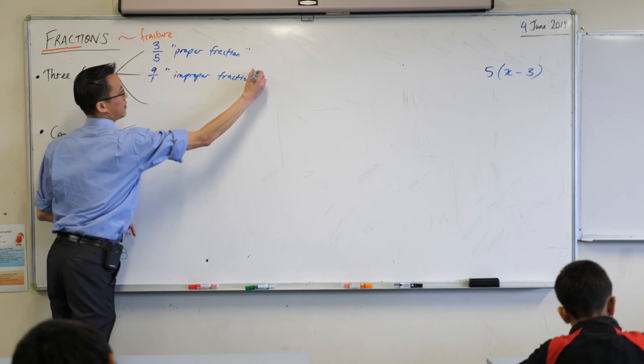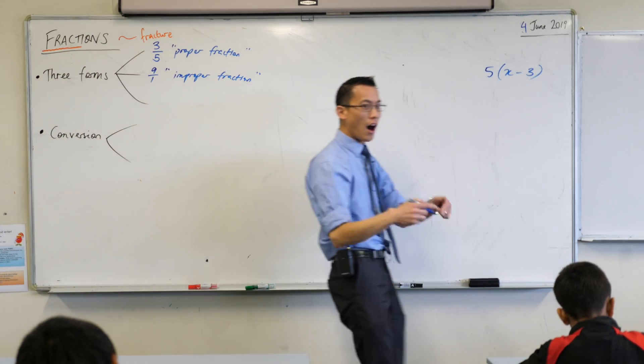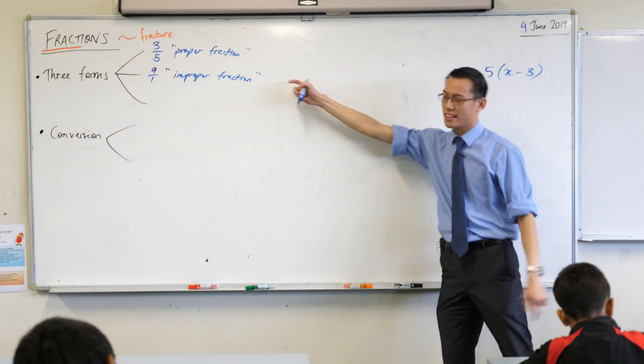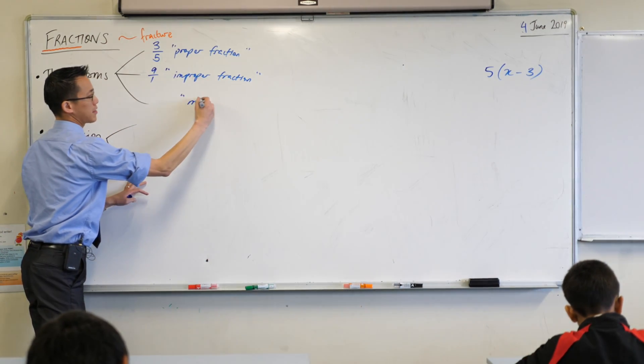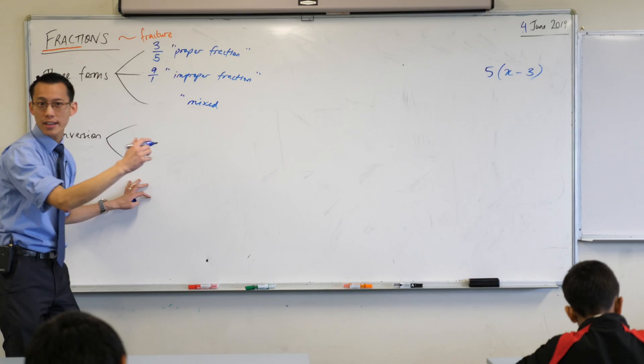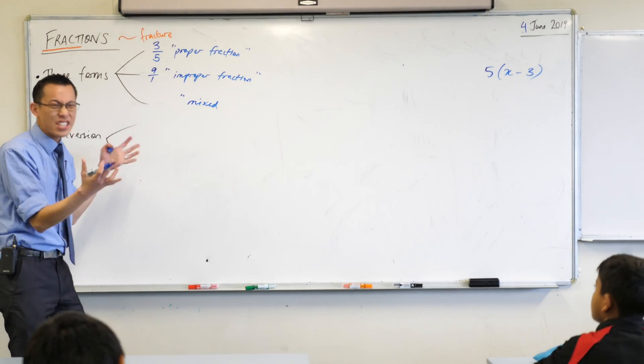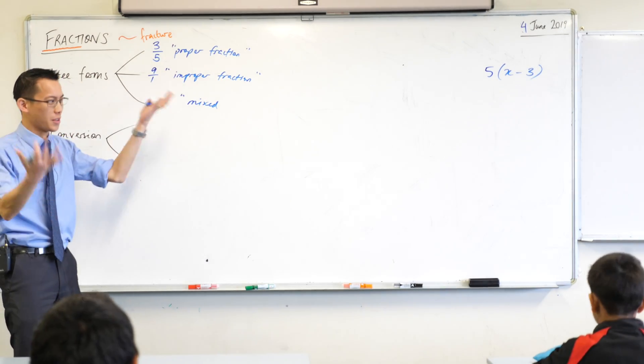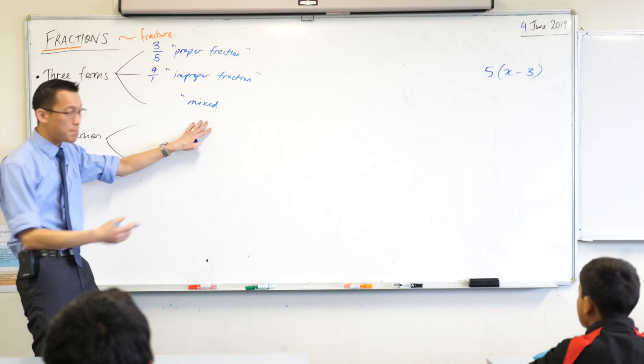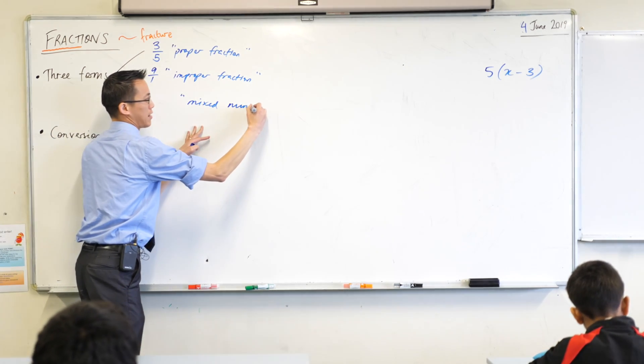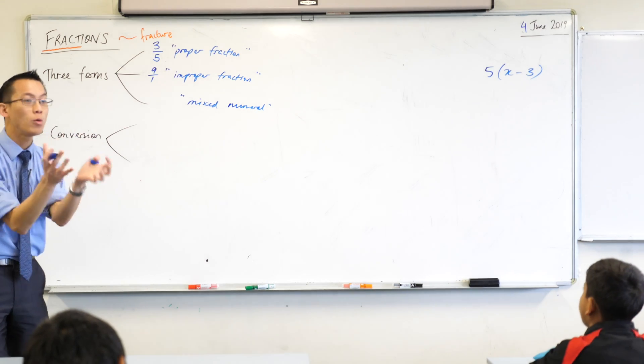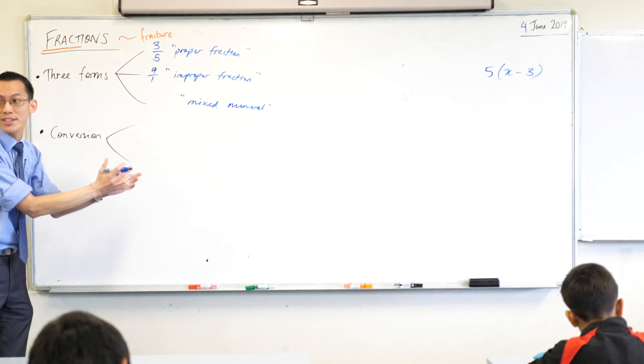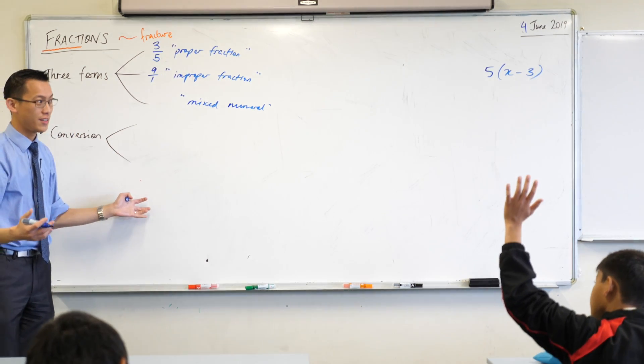And then lastly, there's one other form that's kind of like the improper fraction, but different. Mixed. We tend to call them mixed numerals. It's all the same idea. The idea that it's mixed, a mixed numeral, it's like a fraction bit, and there's also a number, a whole number part, isn't there? Can someone give me an example of a mixed numeral? Three, five over seven.